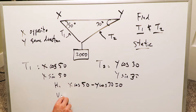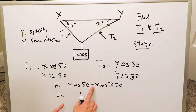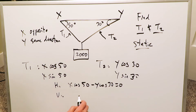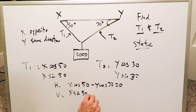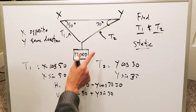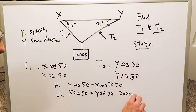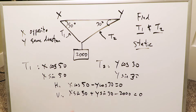For the vertical components: things in the same direction add, and things in the opposite direction subtract. The vertical component of T1 is x sine 50, and of T2 is y sine 30. These add together but are opposed by the weight, giving: x sine 50 plus y sine 30 minus 2000 equals 0. Now we have our two equations and can use substitution to solve.